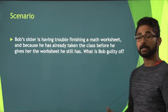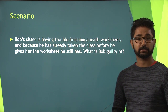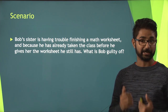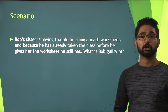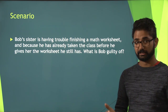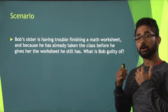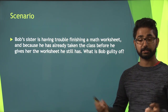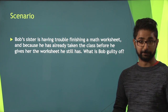Even though Bob isn't currently in this class, it is possible for the professor to do a retroactive grade reduction because of this instance, depending on how much that worksheet was worth for his sister. Because of this, he also actually hurts his sister because she's not learning the material that she needs for the exam that will be coming up.